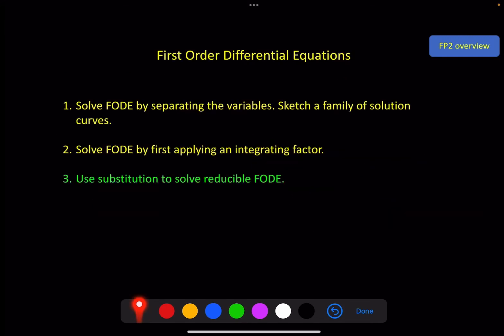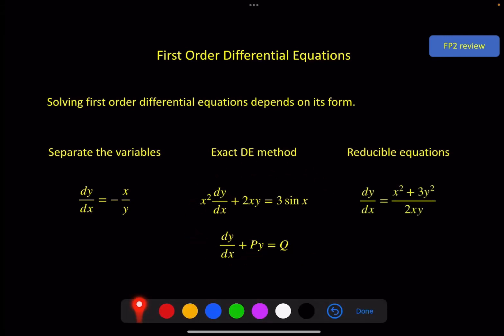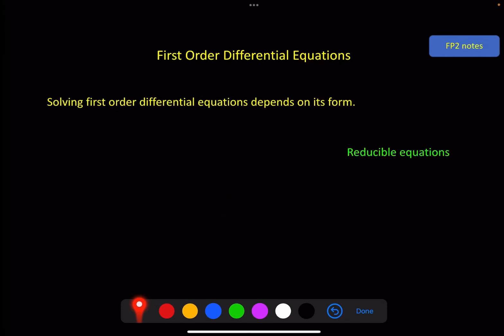In this video we're going to solve reducible first order differential equations by using a substitution. Quickly summarizing what we've had so far: we did separating the variables — if you can separate them, that's probably the easiest way — then the exact differential equation method which we just did in the starter. But there may be times when you can't separate variables and can't put it into that form, and so we use reducible equations.